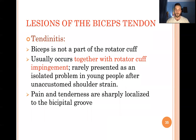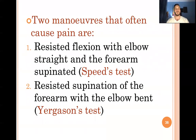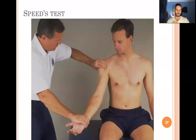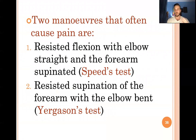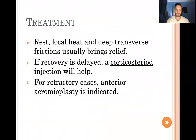Biceps tendinitis usually involves the long head, which travels through the bicipital groove of the humerus to the superior glenoid labrum. It often presents alongside rotator cuff pathology. Two diagnostic tests are used: Speed's test — resisted flexion of the straight elbow with the forearm supinated — and Yergason's test — resisted supination, since the biceps is the main forearm supinator. Treatment includes deep transverse friction massage, local heat, corticosteroids, and anterior acromioplasty if indicated.